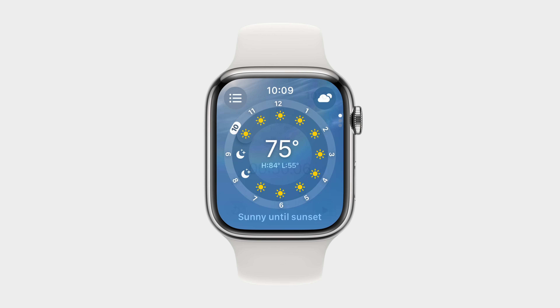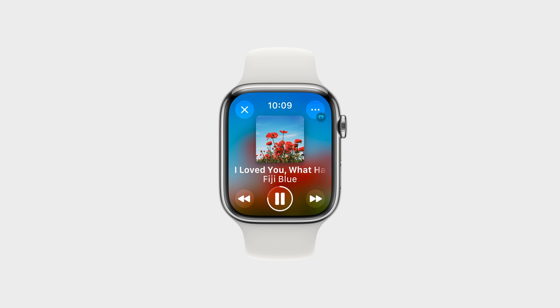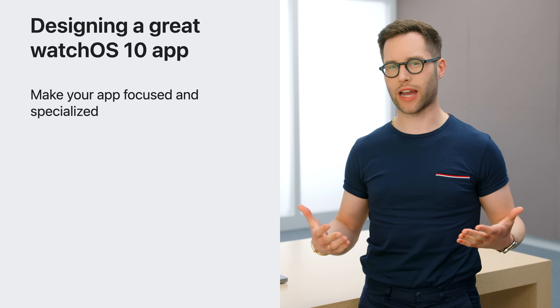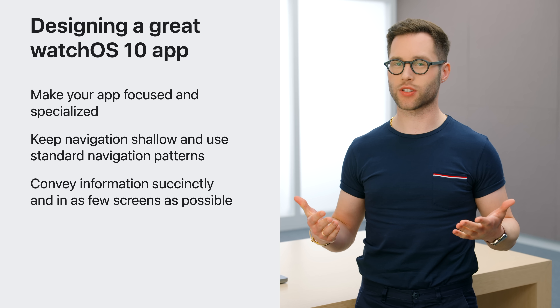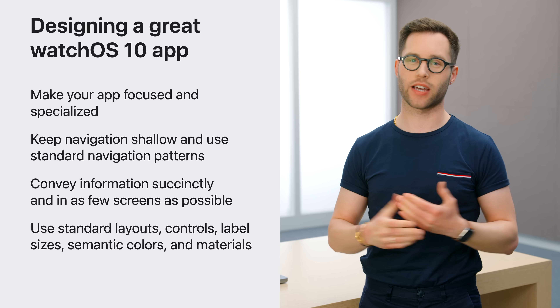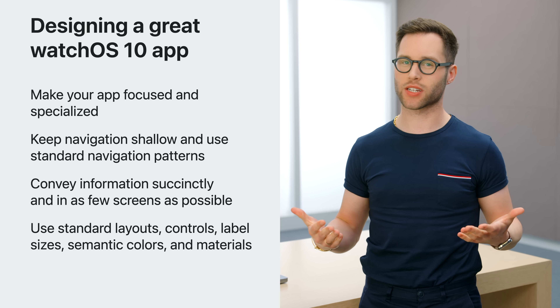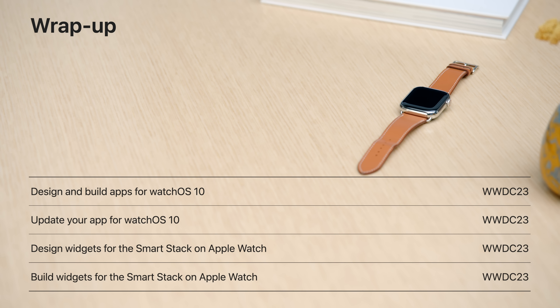Great watchOS 10 apps are focused. They convey information succinctly and are optimized for glanceability and brief interactions. To design a great watchOS 10 app: focus what your app does and make it highly specialized; keep navigation shallow and use standard navigation patterns; convey information in the most succinct number of screens possible; and use standard layouts, controls, label sizes, semantic colors, and materials. If you'd like to go deeper, check out "Design and Build Your App for watchOS 10" and "Update Your App for watchOS 10." We also have great sessions dedicated to widgets and the new Smart Stack. watchOS 10 was a massive effort requiring collaboration from many people and disciplines across the design team and engineering. But this is just the beginning — we cannot wait to see what innovations you bring to Apple Watch with your own apps.